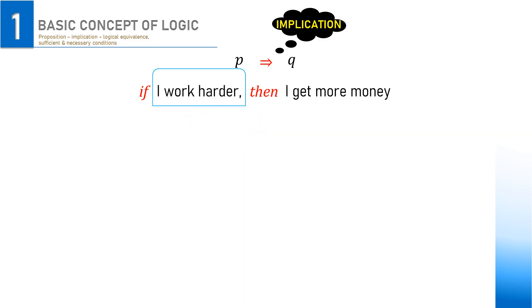Suppose both P and Q are true. Then P implies Q here is true, meaning that if I work harder, then I get more money.